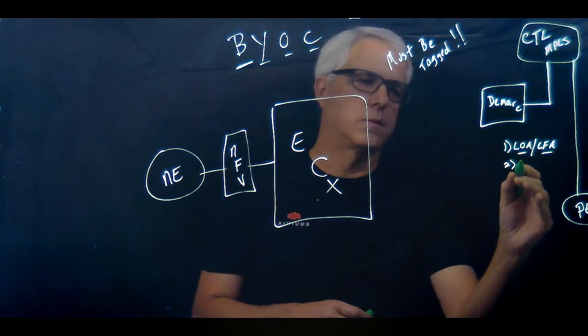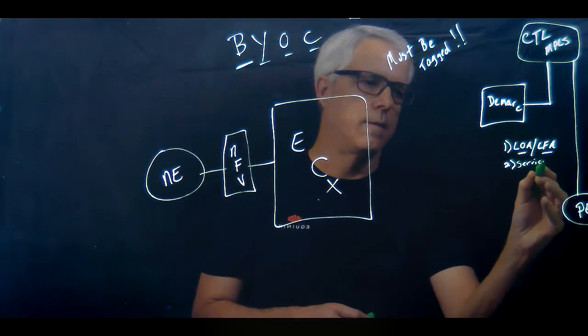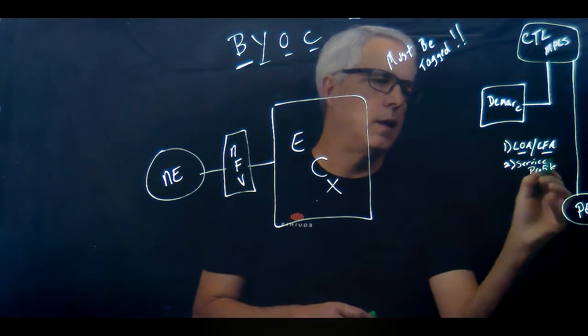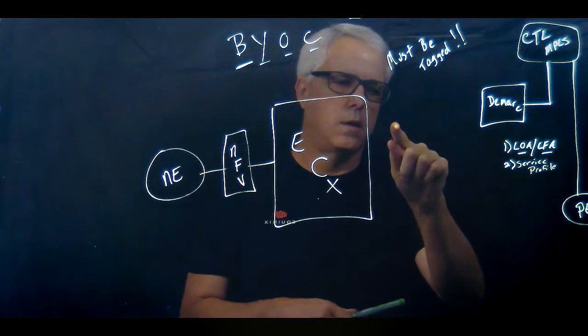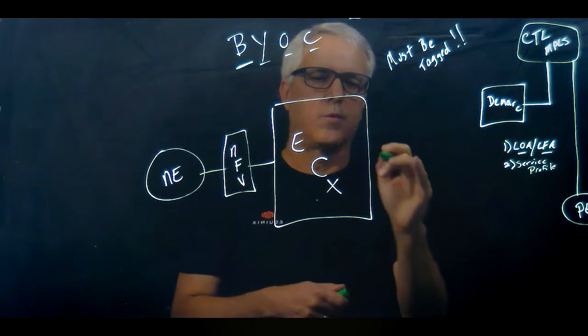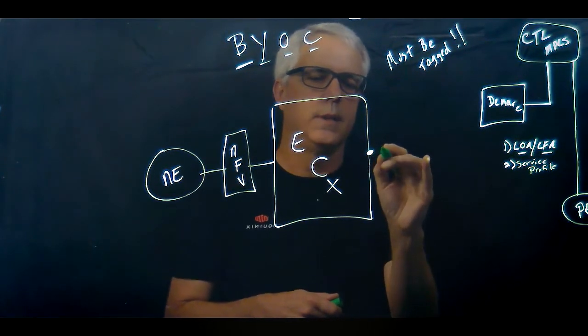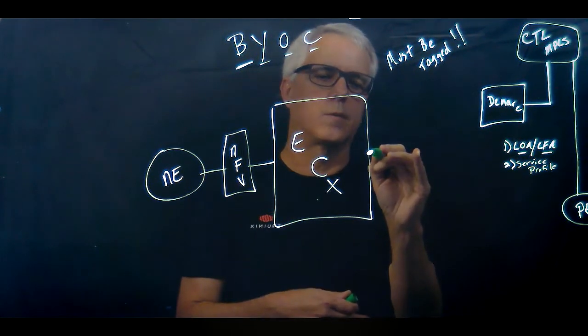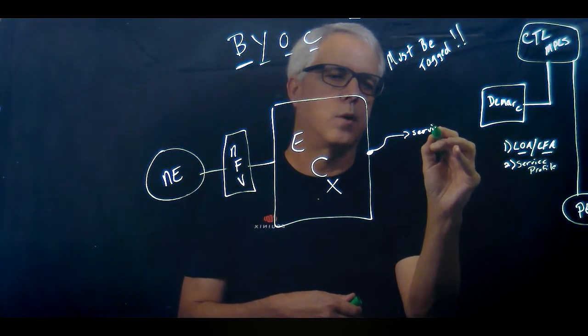The second thing that'll get instantiated as part of the workflow is a service profile. A service profile is a logical construct that will tell the ECX switch what type of port it is, or it'll tell the ECX switch, here's a container to put more information in. So the service profile will get put here on the ECX switch on that port.